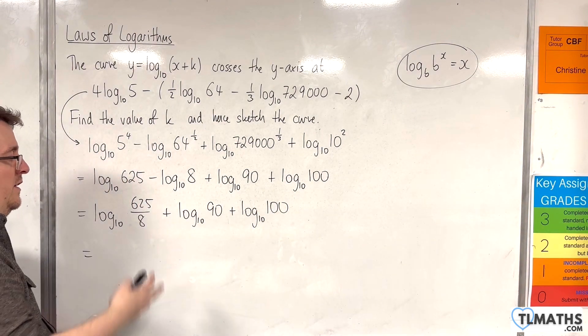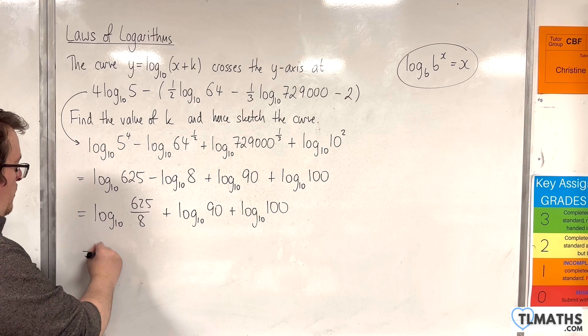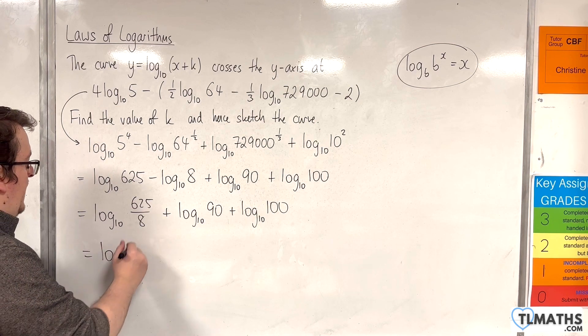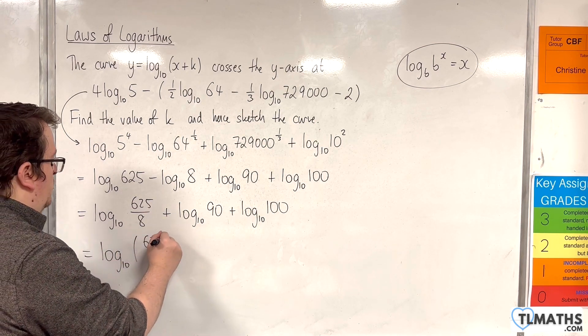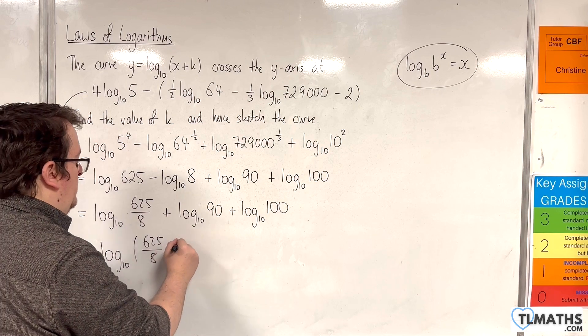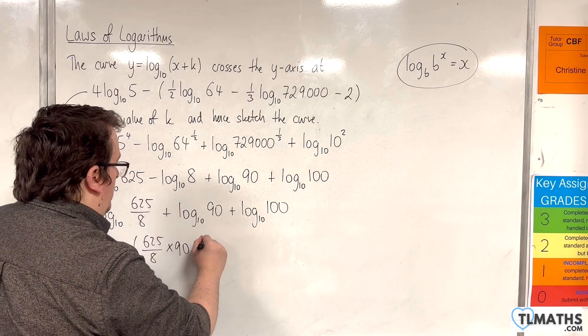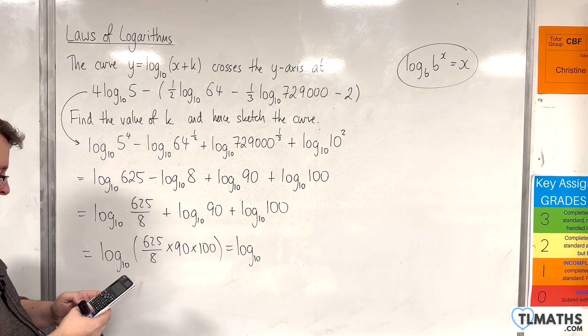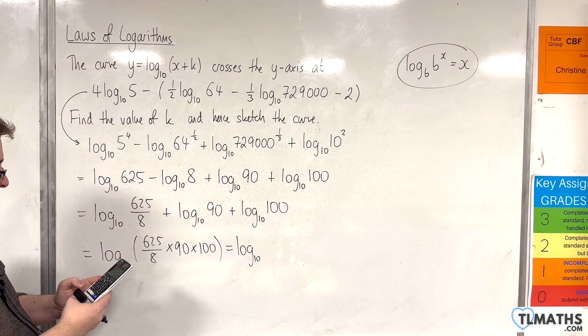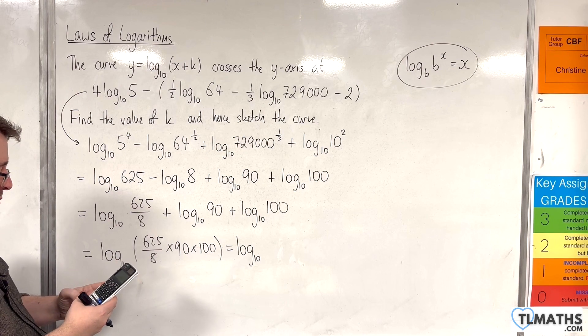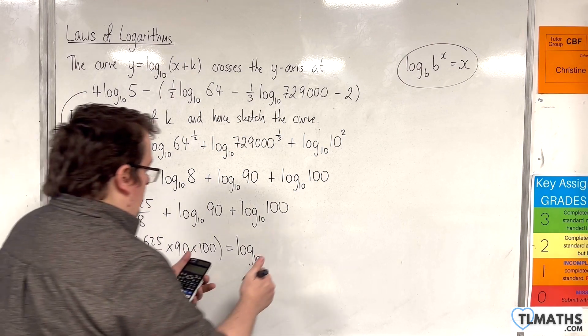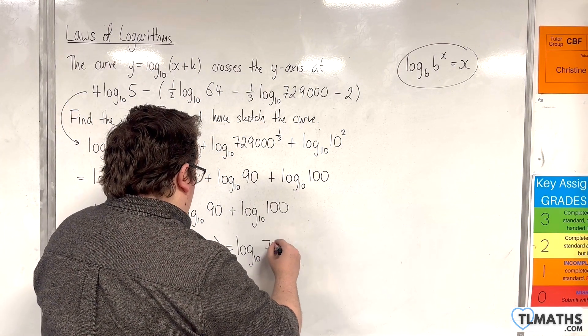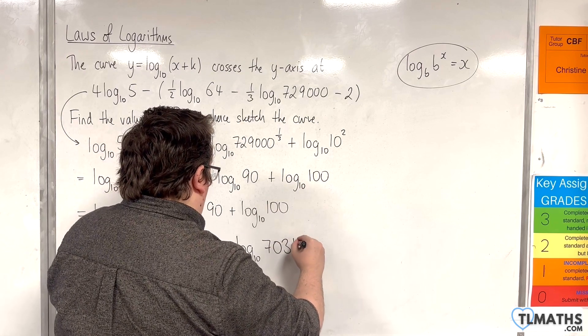Now because they're all added together, we can do this all in one go if we want. So that would be log base 10 of 625 over 8 times by 90 times by 100. And that's 703,125.